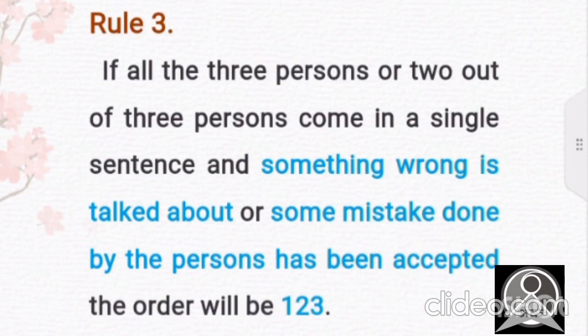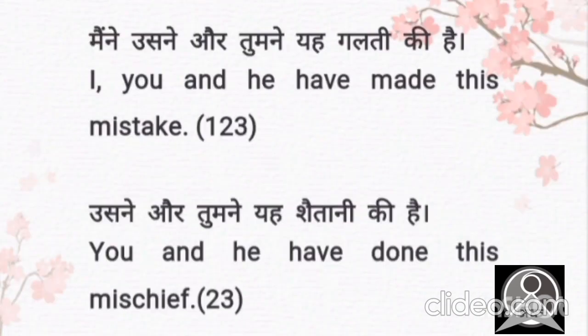Now let's talk about rule number three. If all the three persons or two out of three persons come in a single sentence and something wrong is talked about or some mistake done by the persons has been accepted, then the order will be 1, 2, 3. Let's have an example. Here we are admitting our mistake. So I, you, and he have made this mistake.